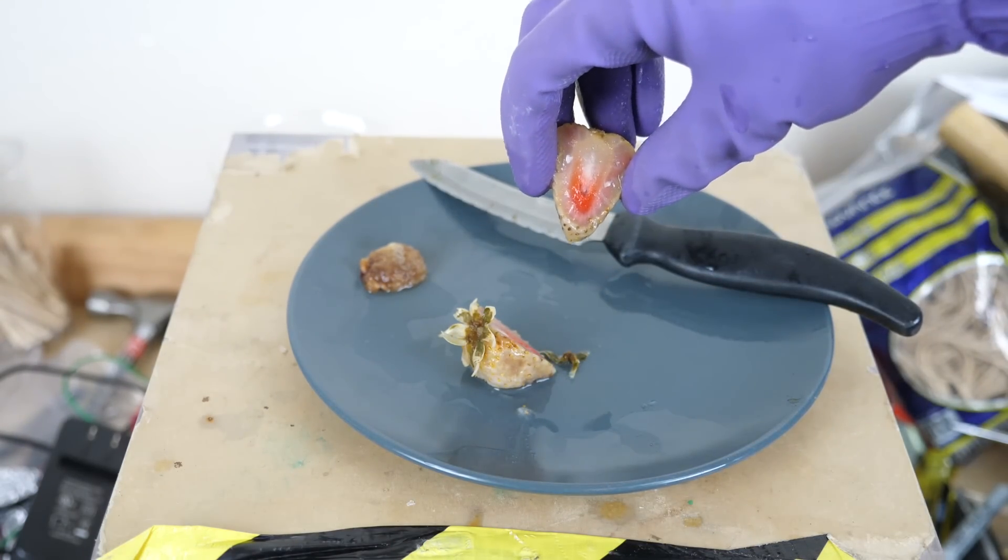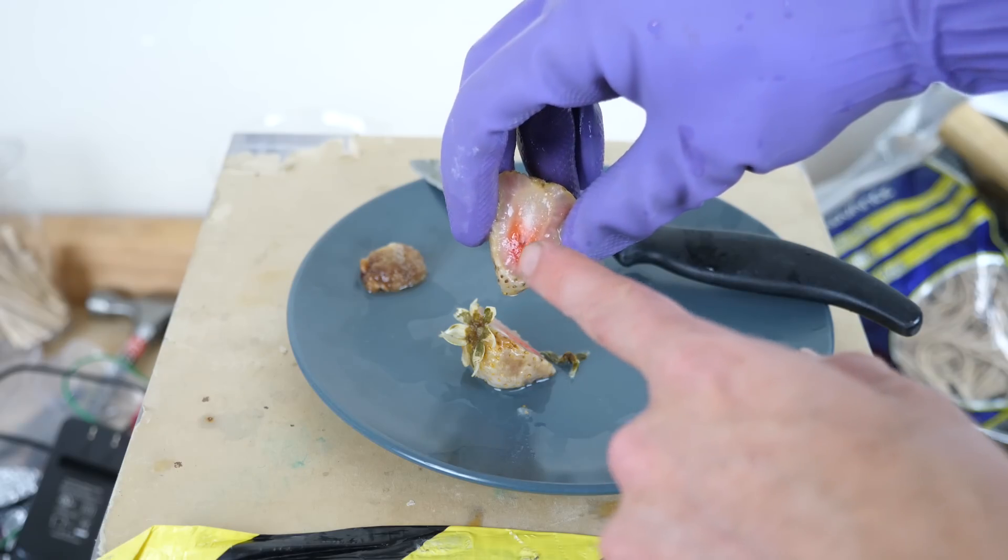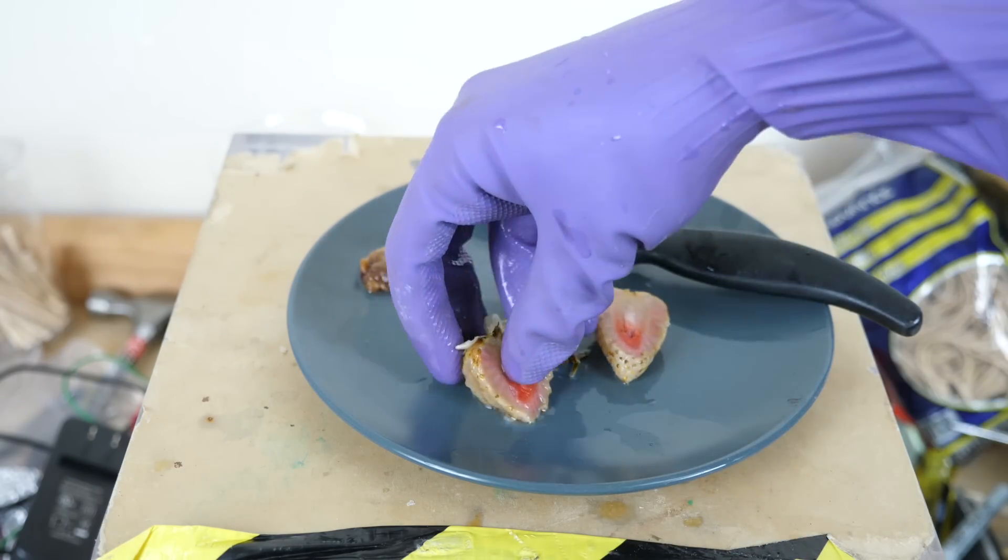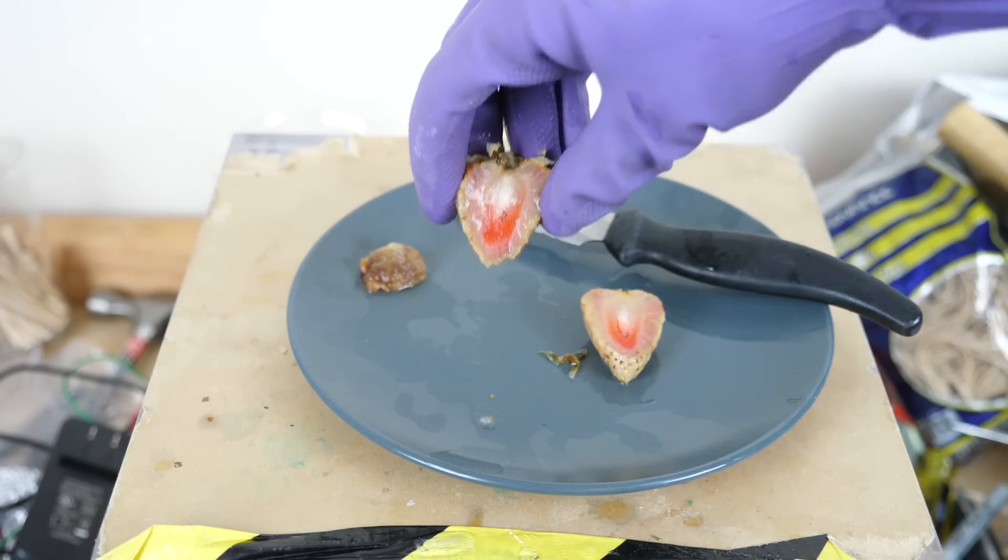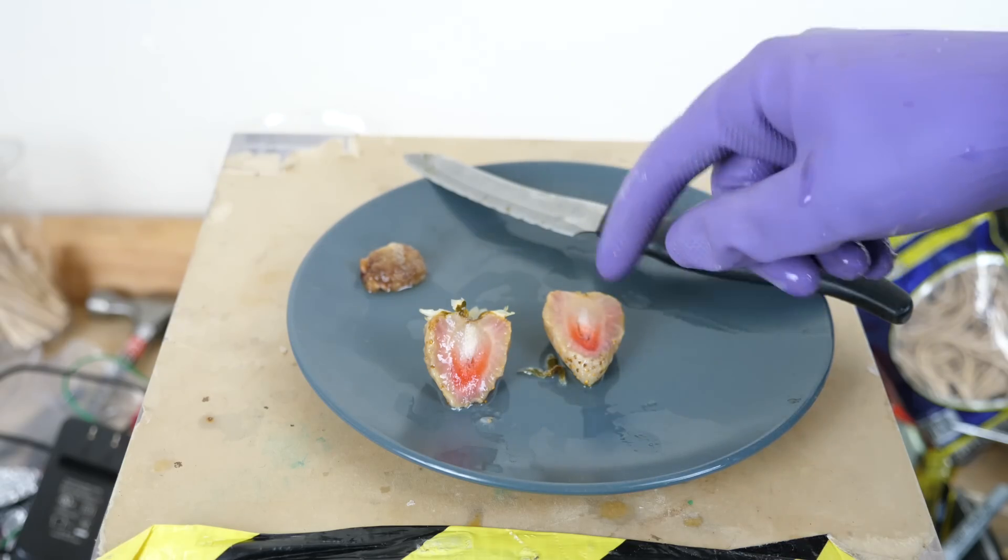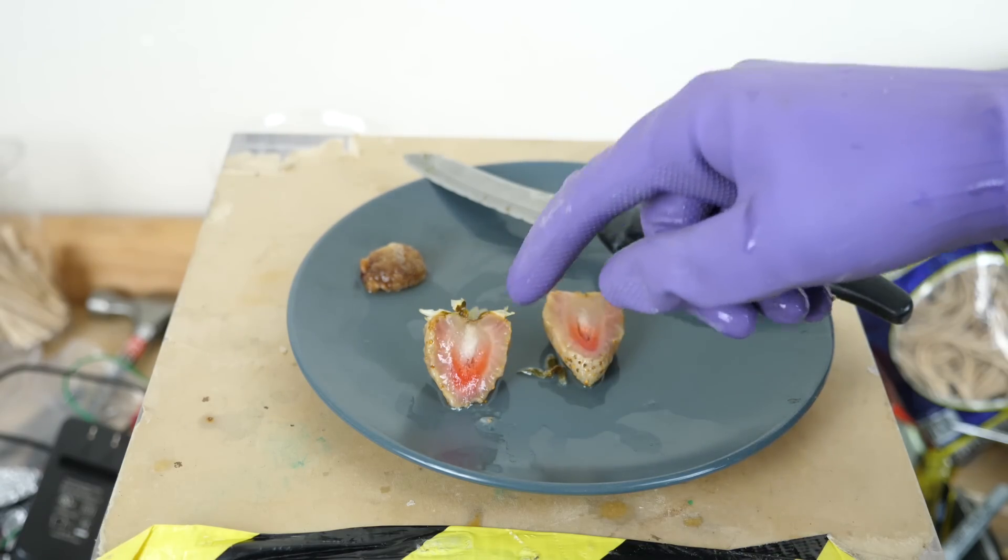It looks like for the most part it's white inside, but it stayed red a little bit in the very center. Look at that. If I had left it soaking longer, it probably would have gotten all the way inside.